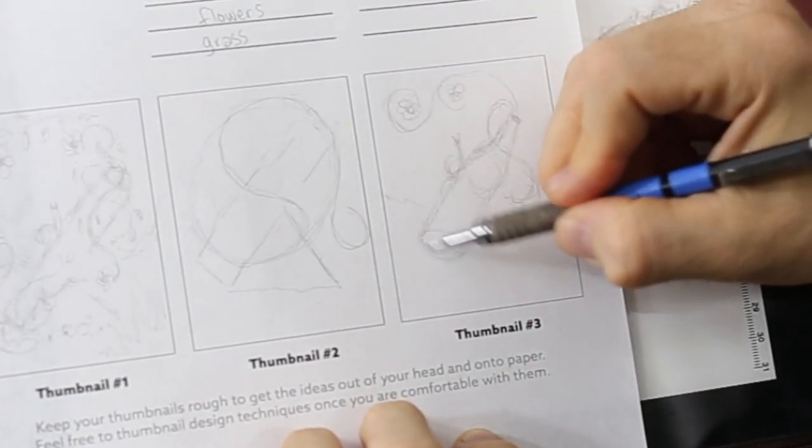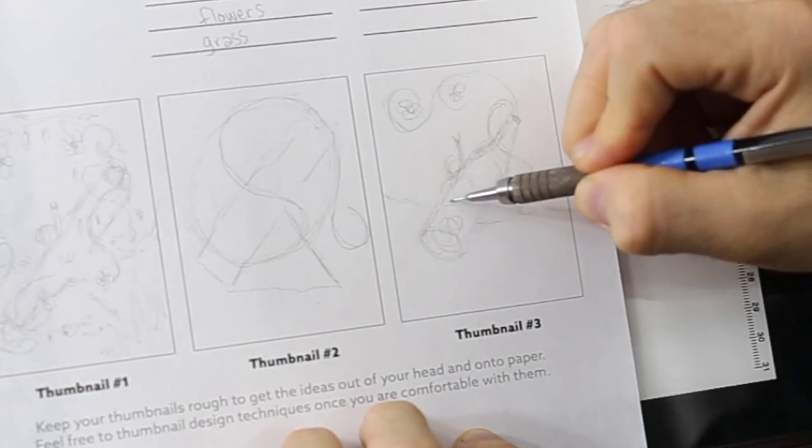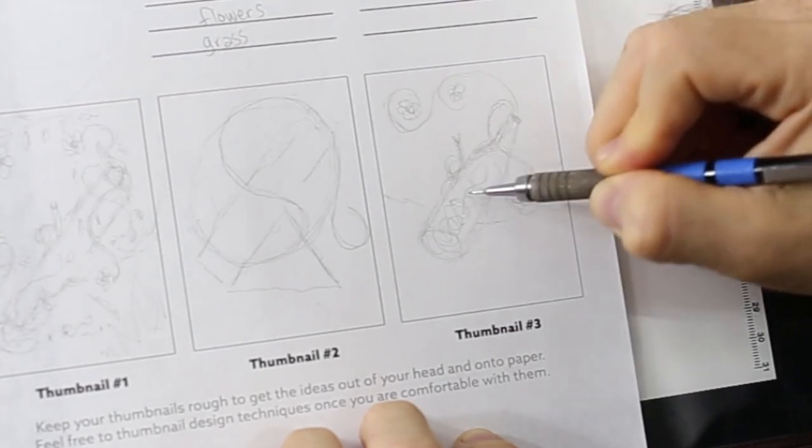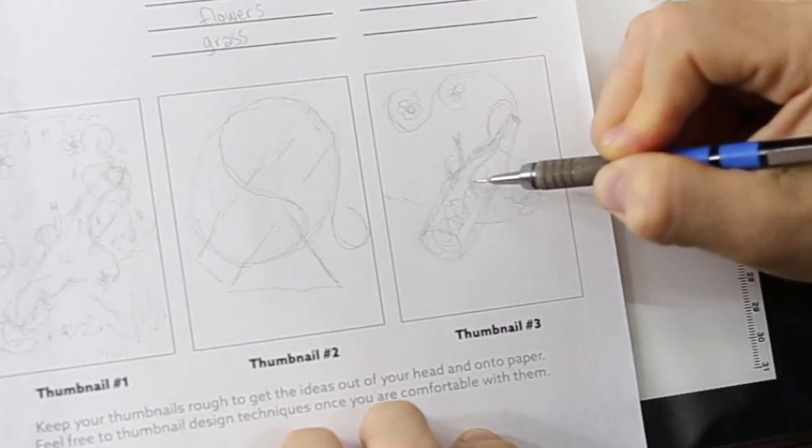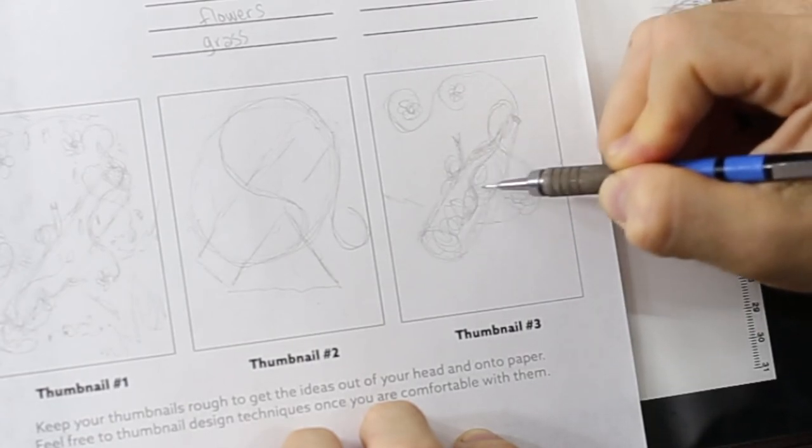Since we don't have an opening in the bottle, we can put some vines inside, and then we can show some of the vines mixing with the roots inside the bottle.